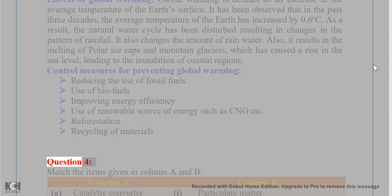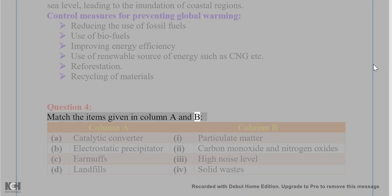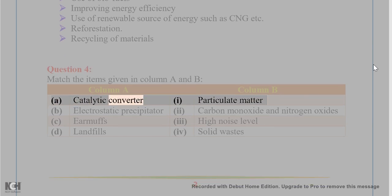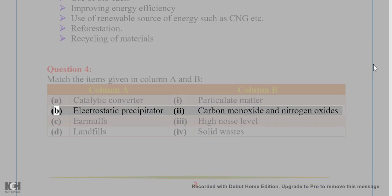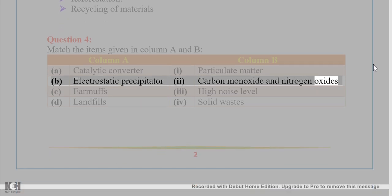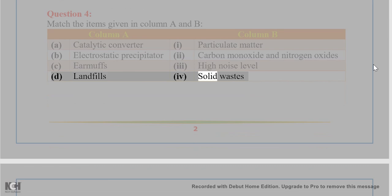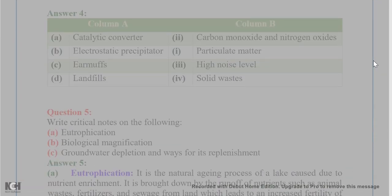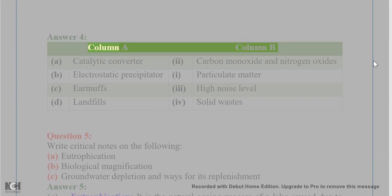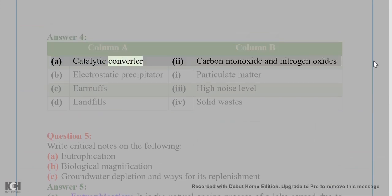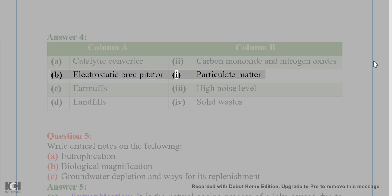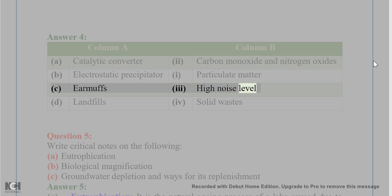Question 4: Match the items given in Column A and B. Column A: (a) catalytic converter, (b) electrostatic precipitator, (c) earmuffs, (d) landfills. Answer: (a) catalytic converter — carbon monoxide and nitrogen oxides; (b) electrostatic precipitator — particulate matter; (c) earmuffs — high noise level; (d) landfills — solid wastes.